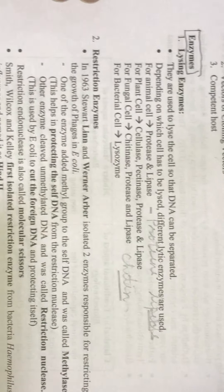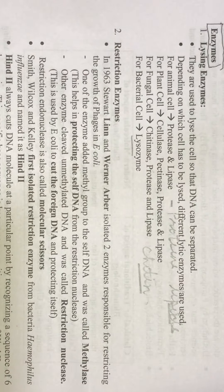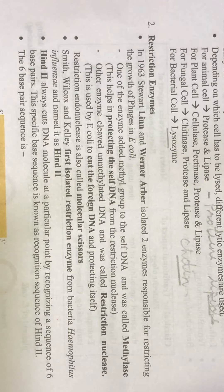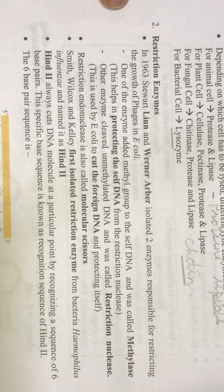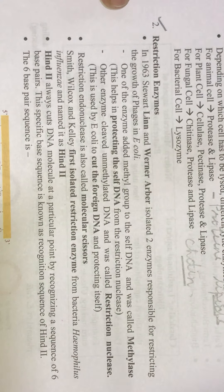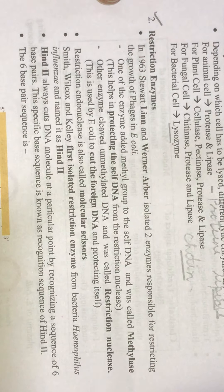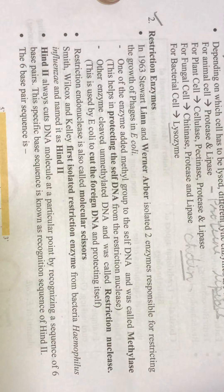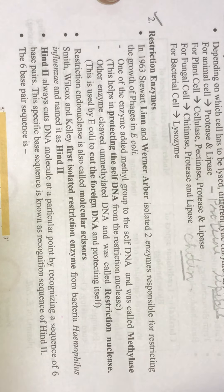The second category of enzymes is restriction enzymes — very, very important. Earlier we saw that the antibiotic resistant gene from the plasmid of Salmonella typhimurium was separated by endonucleases. Endonucleases are nothing else but restriction enzymes.